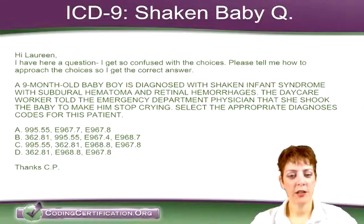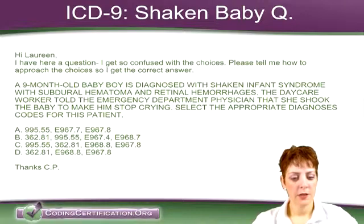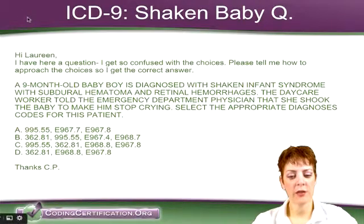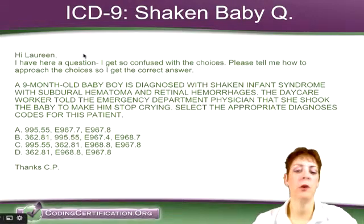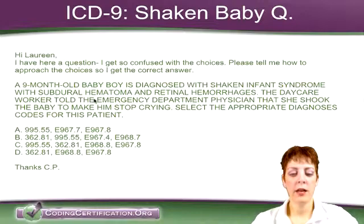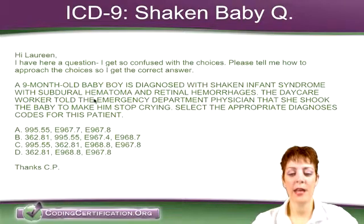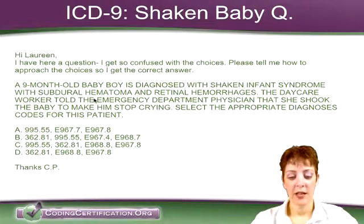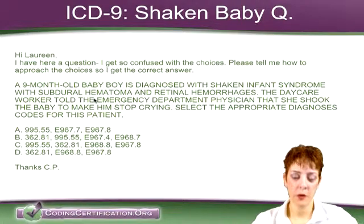So we've got our first question here. It's an ICD-9 question about shaken baby syndrome. CP asks: 'Hi Laureen, I have a question — I get so confused with the choices, please tell me how to approach the choices so I get the correct answer.' A 9-month-old baby boy is diagnosed with shaken infant syndrome with subdural hematoma and retinal hemorrhages. The daycare worker told the emergency department physician that she shook the baby to make him stop crying. Select the appropriate diagnosis codes for this patient.